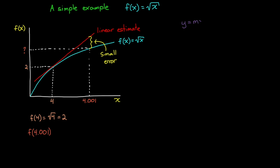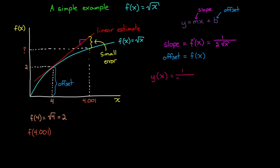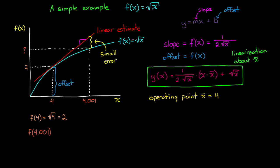The equation for a line is y equals mx plus b, where m is the slope and b is the offset. The slope at any point along the function is just the derivative of the function, and the offset is the value of the function at the operating point. So our linearized equation, y of x, would be the slope at the operating point x bar times the distance away from the operating point plus the offset. This is a linearization around x bar, and in our case x bar equals 4. This gives the linear equation 1 fourth times x minus 4 plus 2.